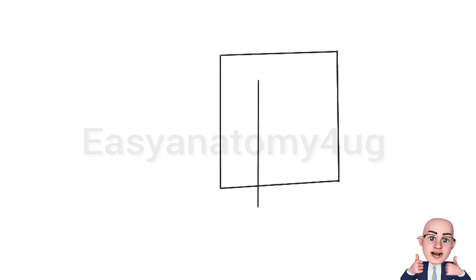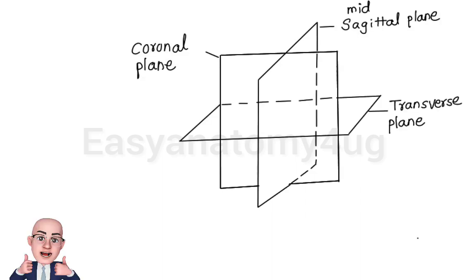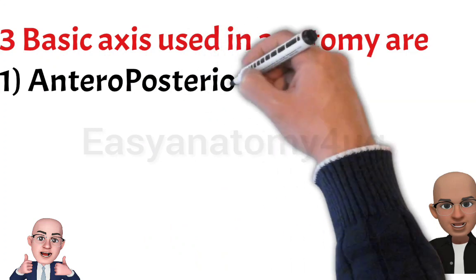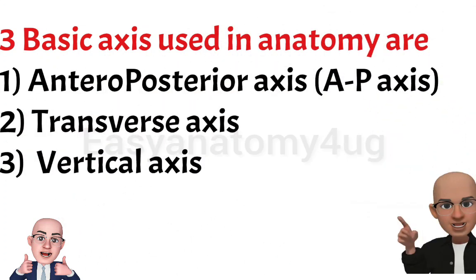So these are the three planes: coronal plane, sagittal plane, and transverse plane. To discuss the basic axis, these are antero-posterior, transverse, and vertical axis.